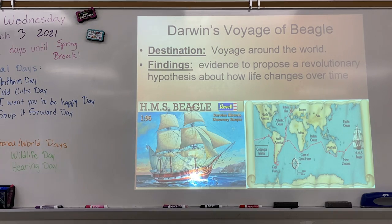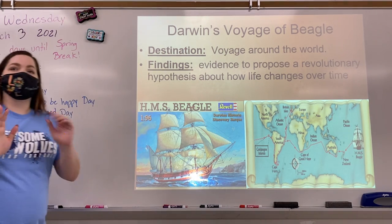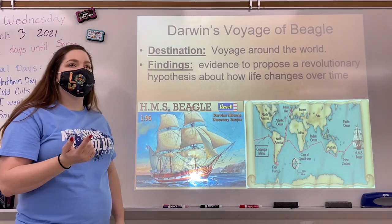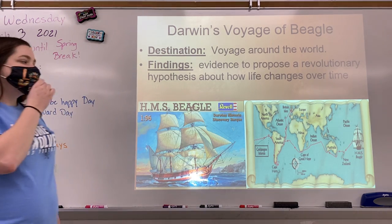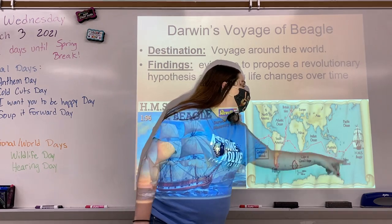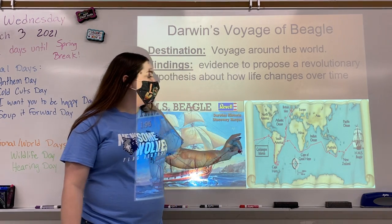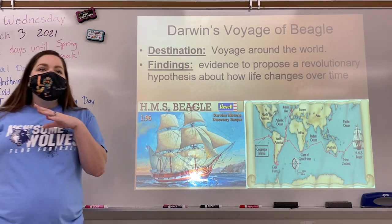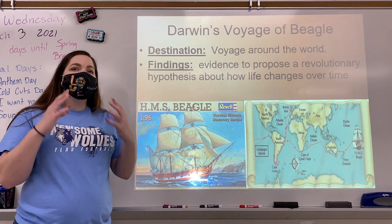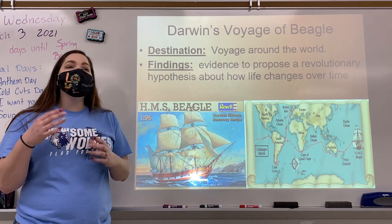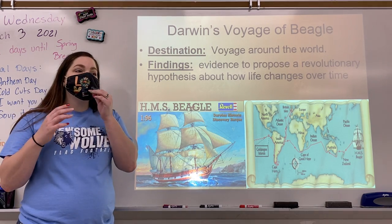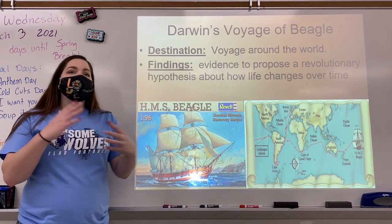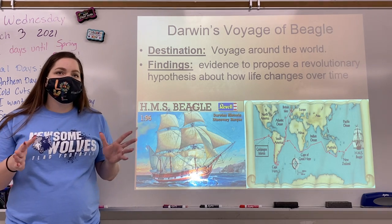Going back to Darwin — he did something really cool and traveled the world on a ship called the HMS Beagle. He made his way throughout the oceans and came across a group of islands called the Galapagos Islands. There he found a lot of information and evidence for the theory of evolution, and a lot of things he was not expecting. This is why we focus so much on the Galapagos Islands — because so much of what he found was completely unexpected.